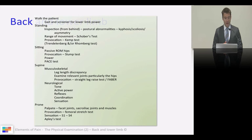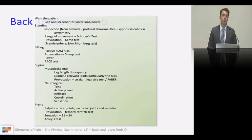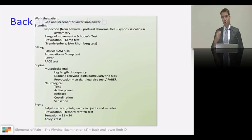You might want to get them to do a couple of screeners looking for lower limb power. Then in the standing position, you're going to look for some red flags, check your range of movement, and you might want to do a provocation test. I do a Kemp's test to see if I can extend, rotate, and load the facet joints, trying to reproduce my patient's pain.